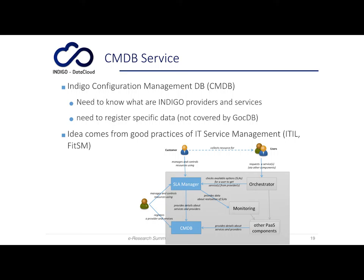There is another component, the Indigo Configuration Management DB (CMDB), that is very similar to the information system — the BDI — implemented inside the EGI Federated Cloud. This component extends that component and collects and provides all the information needed to describe providers and services, and also provides the capability to register specific data not covered by the GOC DB, which is the information database used inside EGI.